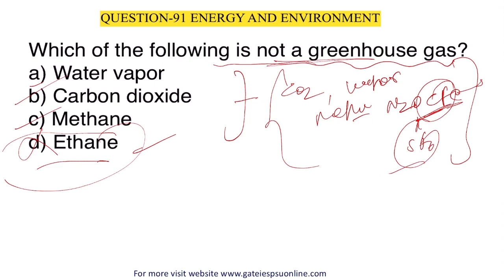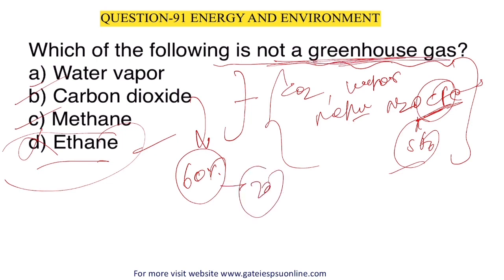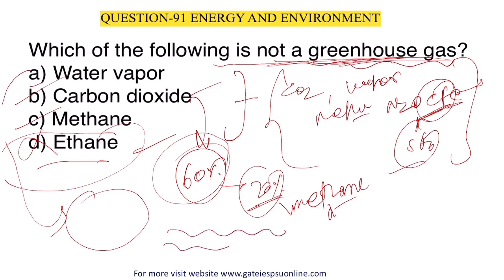CO₂ is responsible for nearly 60% of the greenhouse effect, and methane for nearly 20%. Water vapor is also very important because it absorbs both incoming and outgoing sun rays, creating a double greenhouse effect. Ethane is not a greenhouse gas. Other greenhouse gases include N₂O, CFCs, SF₆, and HFCs. Answer is option D.